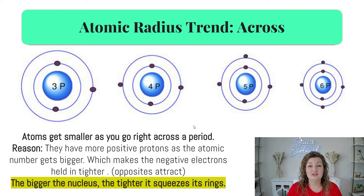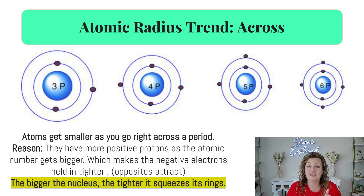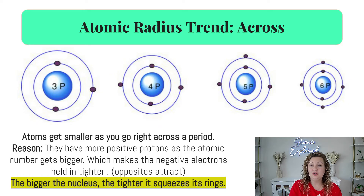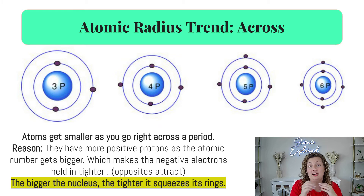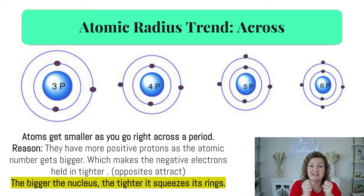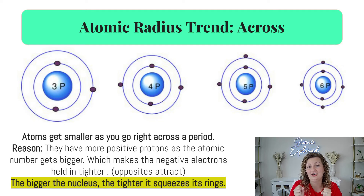We need to understand why this trend is in effect. As we go across the periodic table — across a period — we are increasing the number of protons as we move across. With every added proton, we are increasing the attraction to the surrounding electrons. Those positive and negatives are attracting, and those protons are pulling in on the electrons more and more as we get an increased number of protons. So those energy levels will be kind of compressed in, and our atom is going to shrink down in size because of that strong attraction with each added proton.